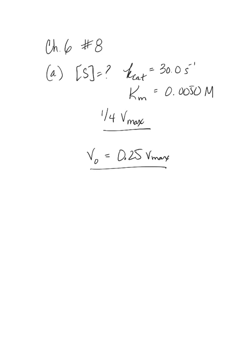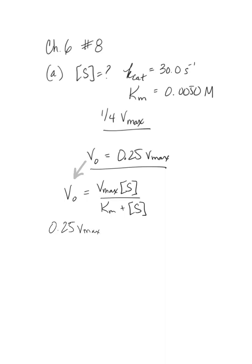With this relationship in place, we can then use the Michaelis-Menten equation. Initial velocity equals Vmax times substrate concentration over Km plus substrate concentration. We can divide both sides by Vmax. Let's do a simple substitution — from over here to over here.